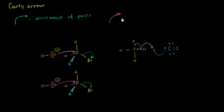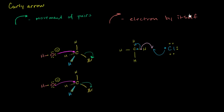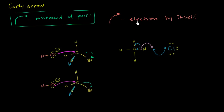The half arrow represents the movement of a single electron by itself — an electron not part of a pair. The full arrow is what you'll see through most of organic chemistry, dealing with the movement of pairs. The fish hook arrow shows up more in free radical reactions, which we do cover, but that comes later.